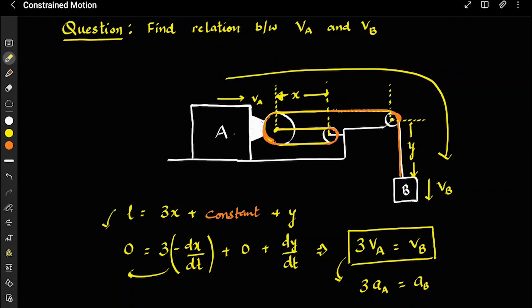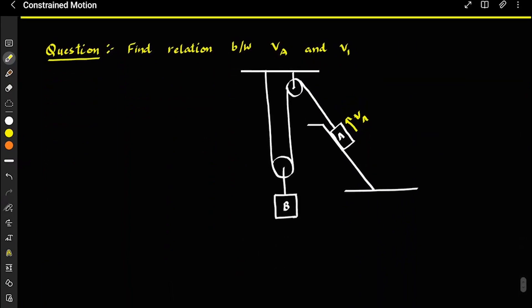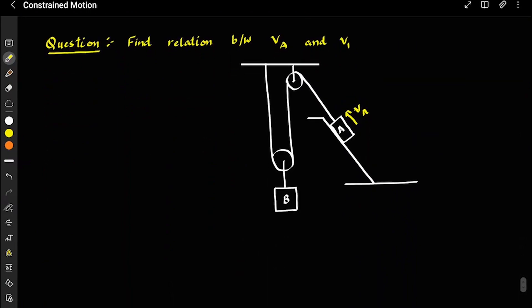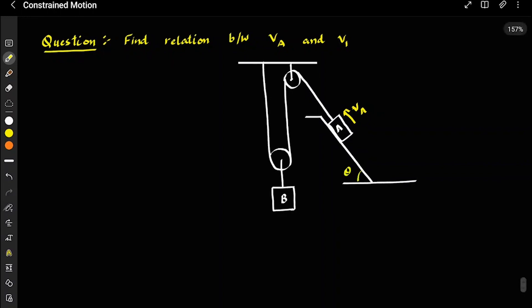Now the next question: block A is placed on an inclined plane of angle theta, and we have to find the relation between VA and VB. Let's say VB is the velocity of B. We again start by marking all the pulleys — marking this one and this one. The length between the two fixed pulleys is constant, so we don't need to worry about it.